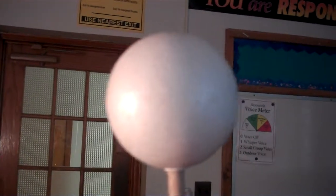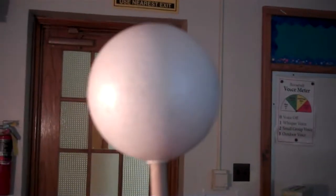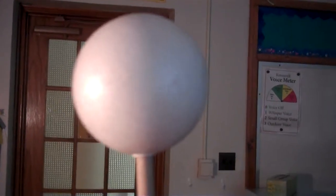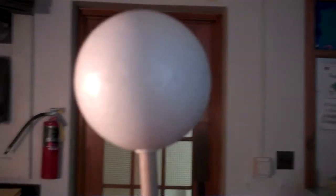But if I put the camera back into the position that the Earth would be in at this point, you can see that we can actually only see about a fourth of the moon that is lit up, and the other fourth that we can see is not lit up.